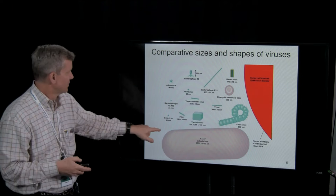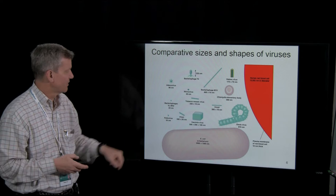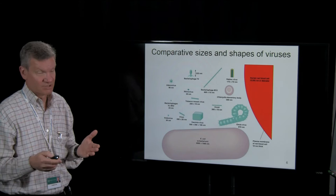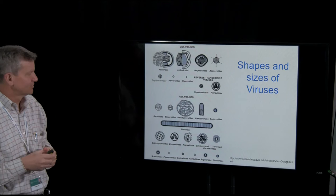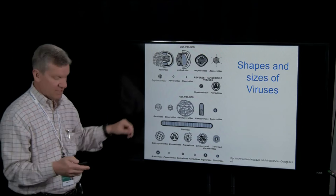Here's poliovirus. Polio was a problem back in the 1950s. Look how small that virus is compared to E. coli — and remember, E. coli requires oil immersion on a microscope to see. Once again, different sizes and shapes of viruses — some of these look like the Sputnik satellite, the first to orbit Earth. Lots of different shapes and sizes.